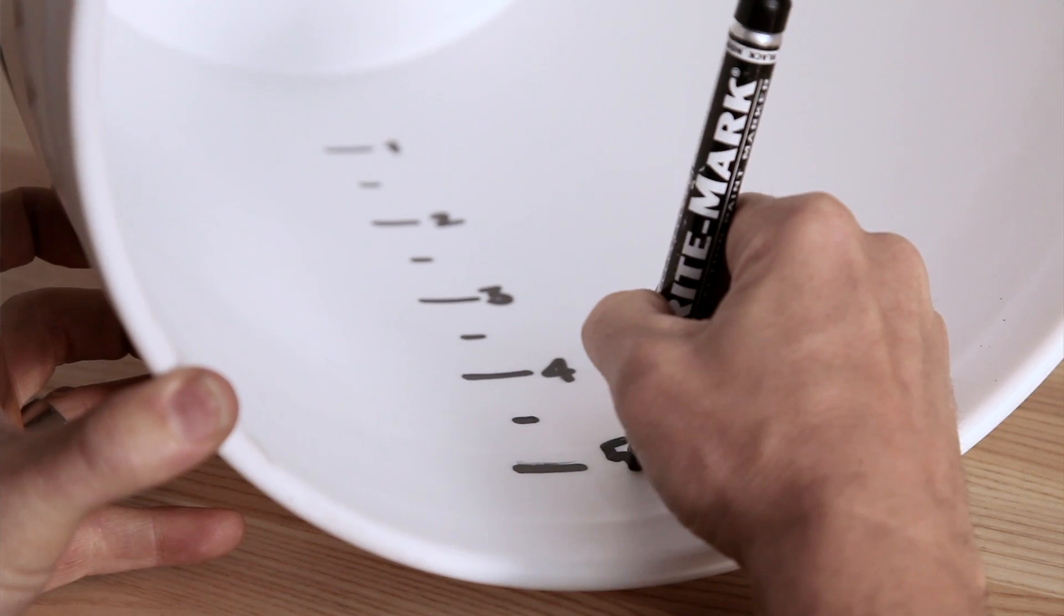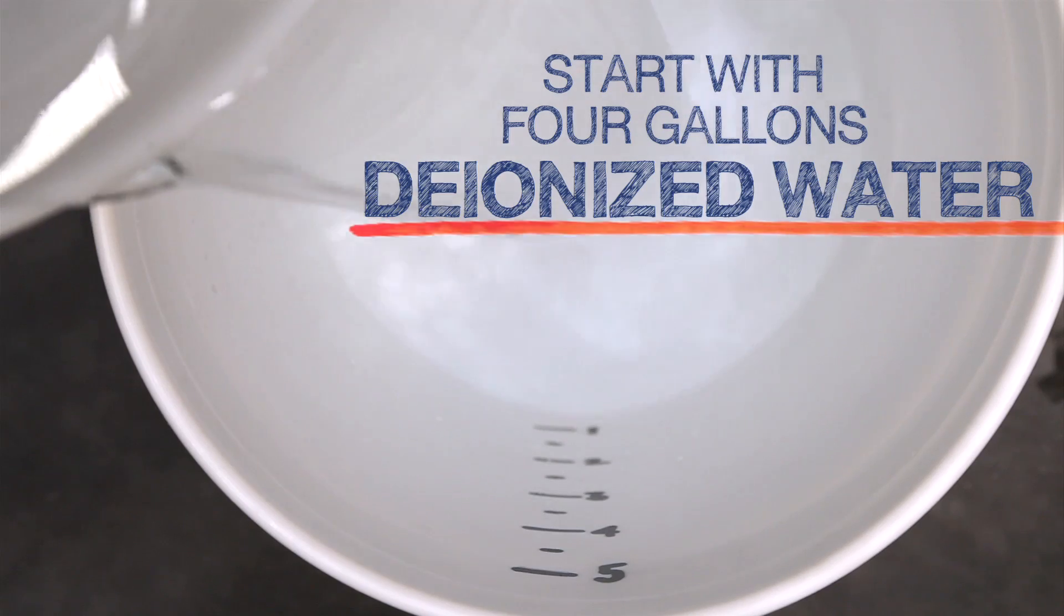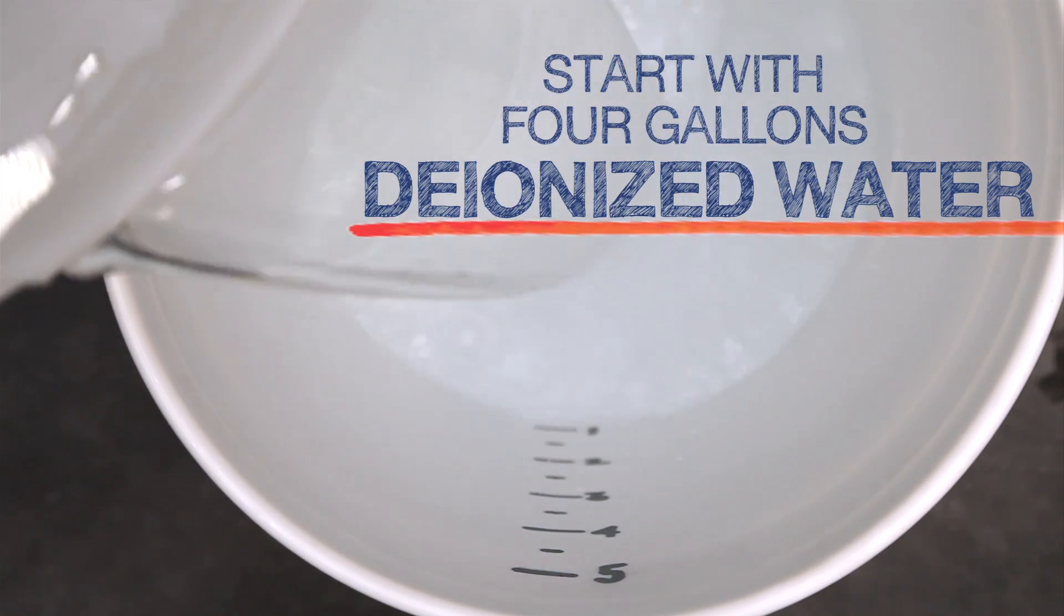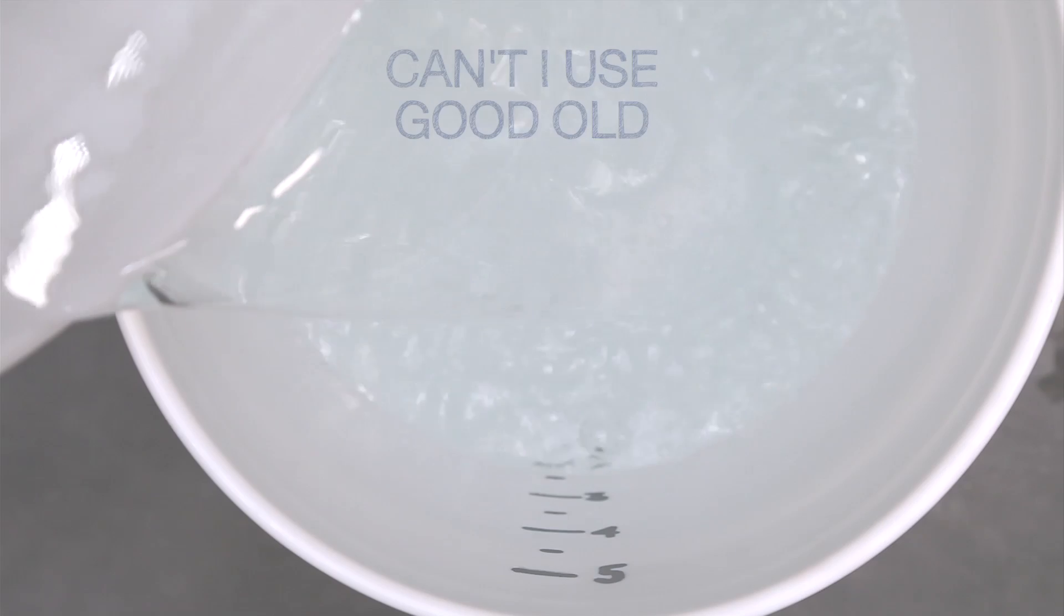We use a graduated bucket that we made with some simple measurements and start by pouring in four gallons of deionized water. You might ask why do I need to use deionized water to top up my tank? Can I just use tap water instead?